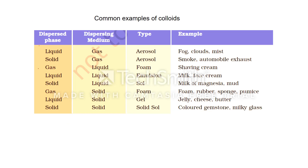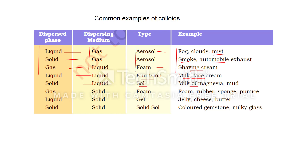Now see the different types of colloids. Gas into gas is always homogeneous, so it is not considered a colloid. Liquid into gas is an aerosol — examples: fog, cloud, mist. Solid into gas is also an aerosol — examples: smoke, automobile exhaust. Gas into liquid is called foam — example: shaving cream. Liquid into liquid is called emulsion — examples: milk, face cream.